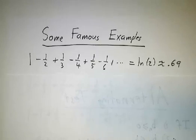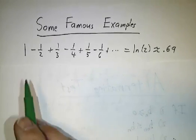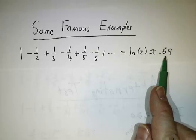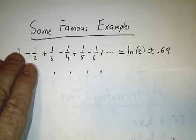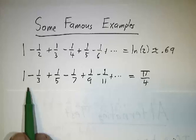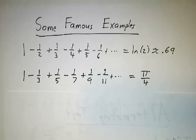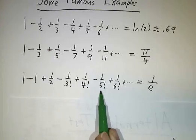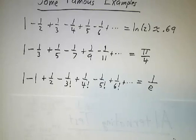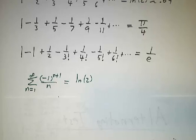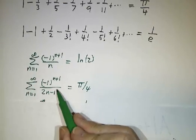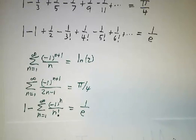Let's close with some famous examples. The alternating harmonic series 1 − 1/2 + 1/3 − 1/4 + ... converges to ln(2) — the value we were homing in on was around 0.69. Using only odd numbers: 1 − 1/3 + 1/5 − 1/7 + ... gives π/4. And 1 − 1 + 1/2! − 1/3! + 1/4! − 1/5! + ... converges to 1/e. In summation notation, these are (−1)^{n+1}/n, (−1)^{n+1}/(2n−1), and (−1)^{n+1}/n! respectively.